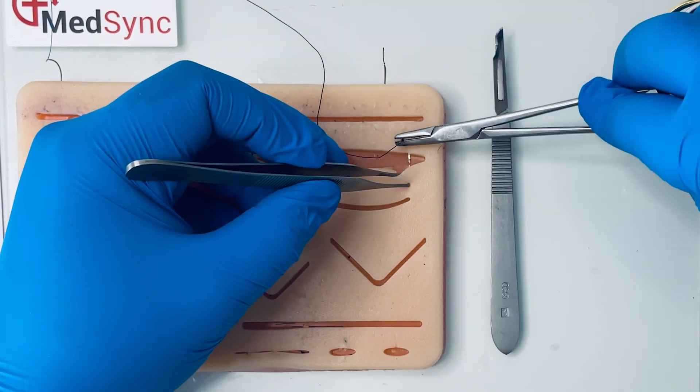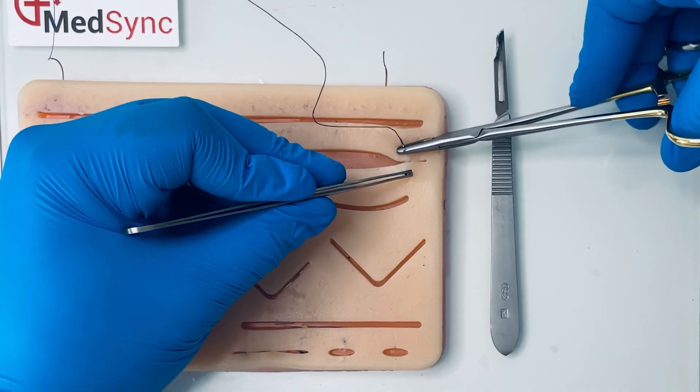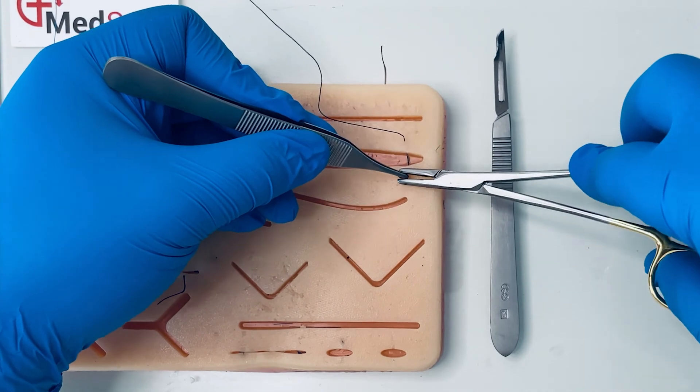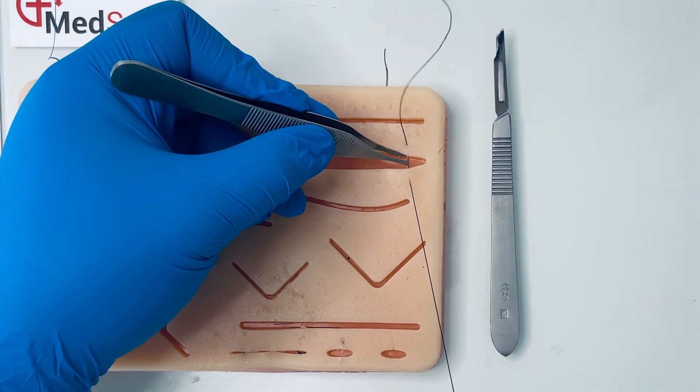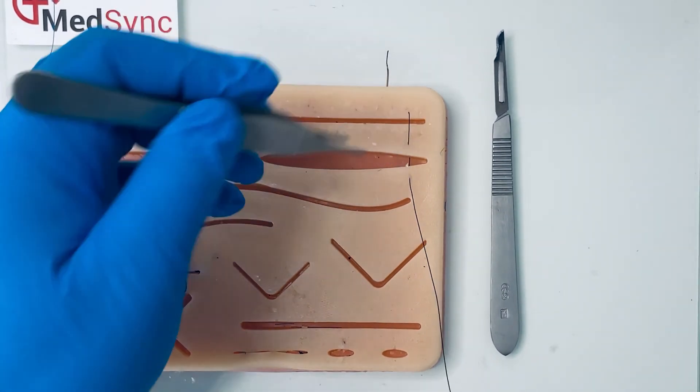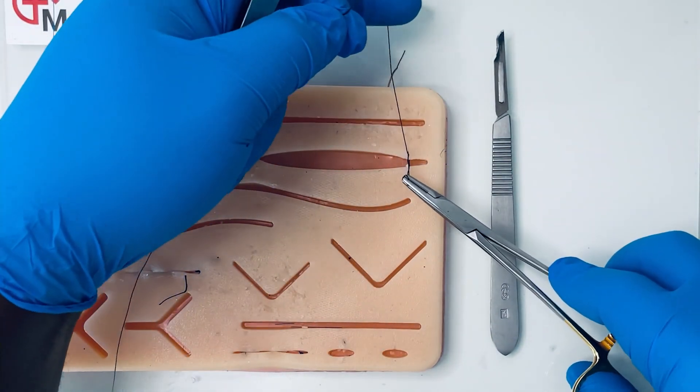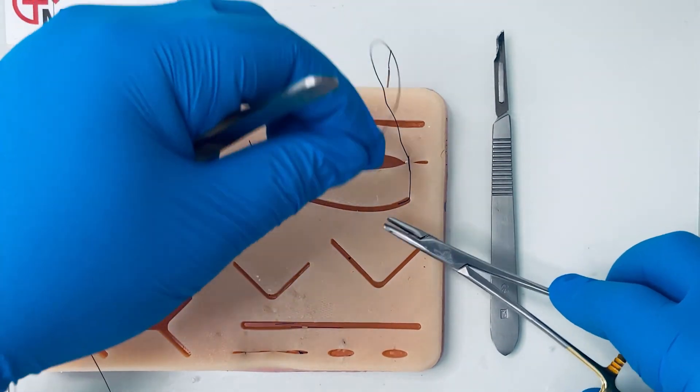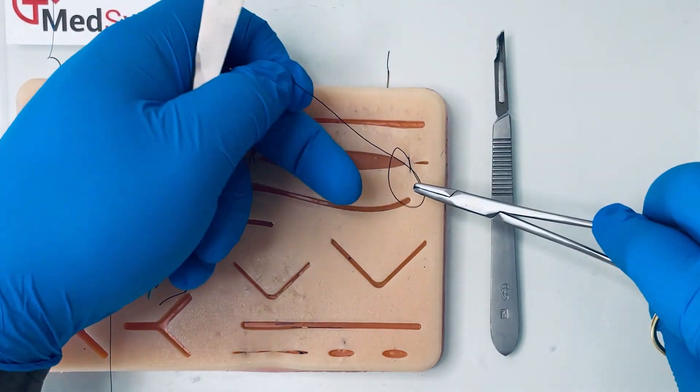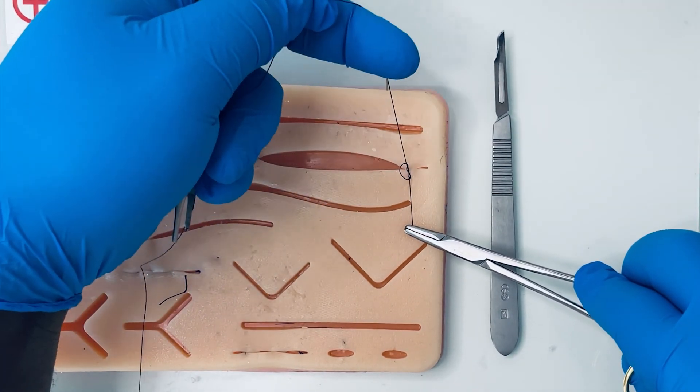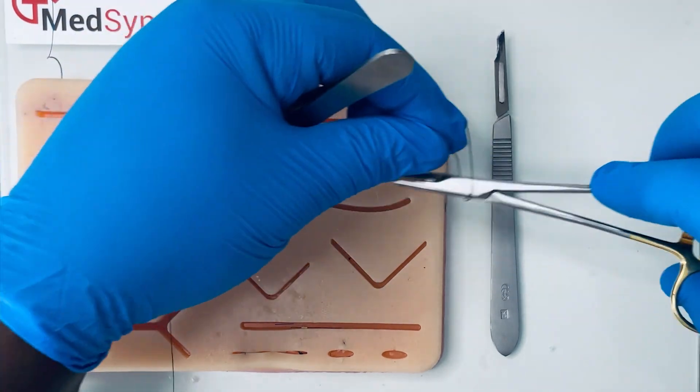In the first technique, after you have tied the first knot, the surgeon's knot, ensure to keep the short thread short. You then throw a reef knot but you do not alternate the position of the long and the short thread. Instead, as you bring the short thread through the loop you apply tension only to the short suture until you have the desired wound approximation.